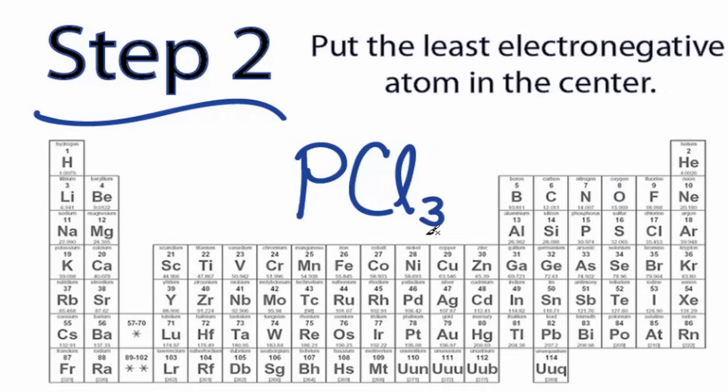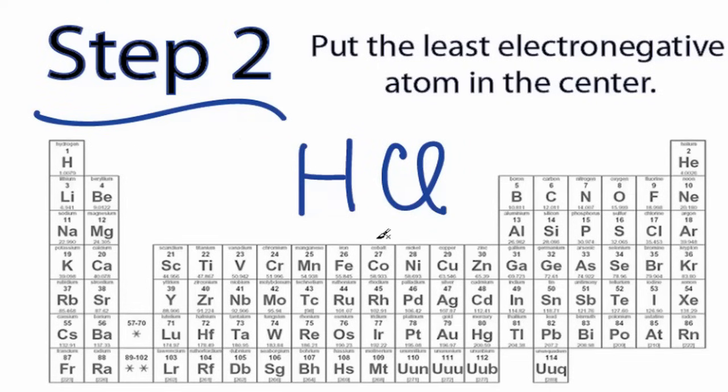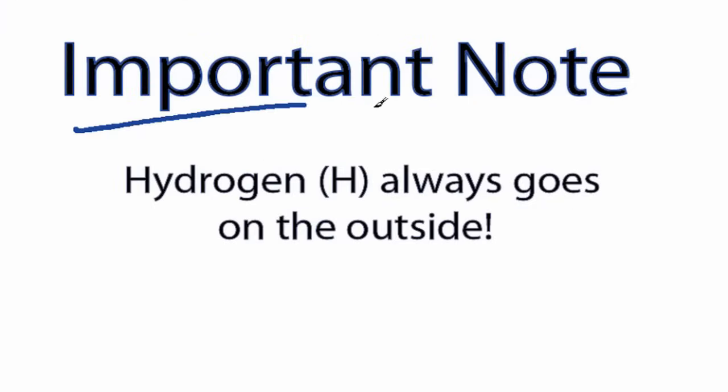For something like PCl3, I can see that phosphorus is further away from the fluorine than the chlorine atom. So I'll put phosphorus at the center and the chlorines on the outside, like this. Some Lewis structures, like HCl, only have two atoms. In that case, you don't have to worry about it because there's no center. An important note, hydrogen always goes on the outside of Lewis structures. Always. Seriously.